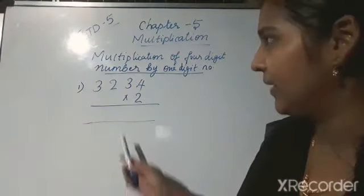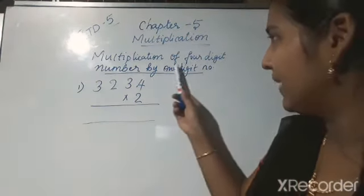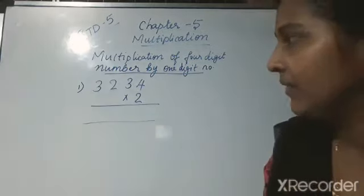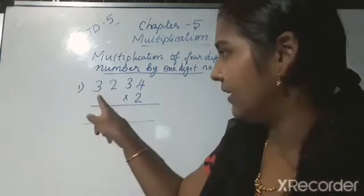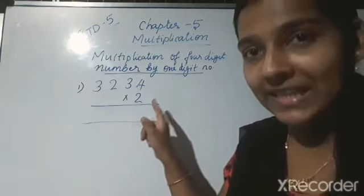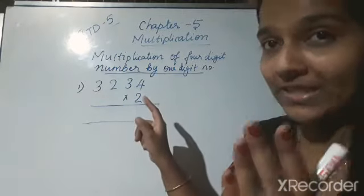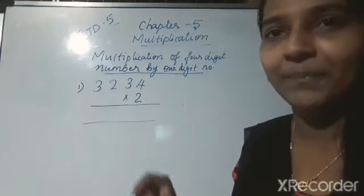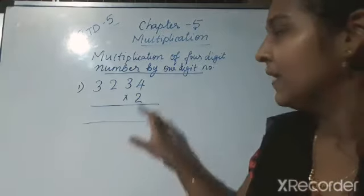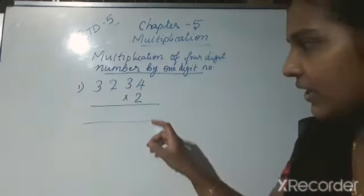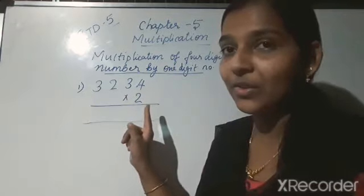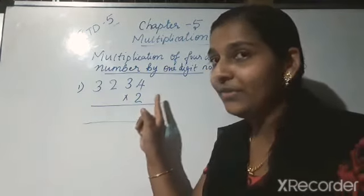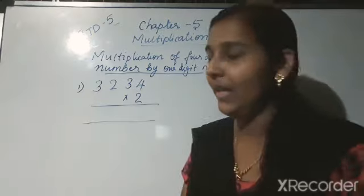Here is our first topic: multiplication of a 4-digit number by a 1-digit number. The multiplicand is a 4-digit number and the multiplier is a 1-digit number. Let's do the multiplication. To answer this question, to multiply this one, you should know the table of 2.